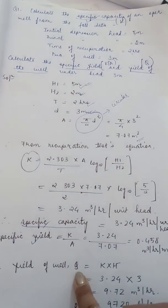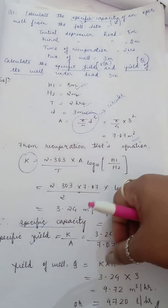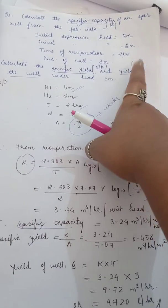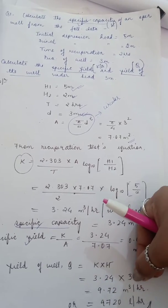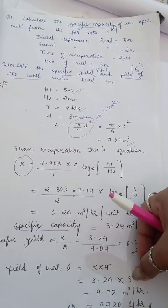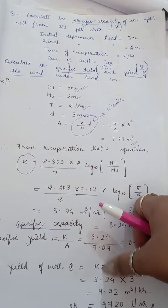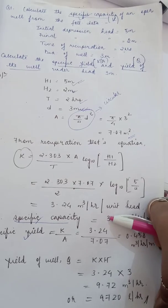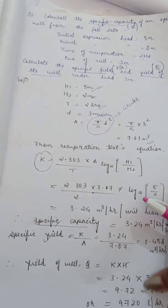Now we're asked to find the yield of the well under head of 3 meters. From Darcy's law, Q equals K times h. Here h is 3 meters, the head we're asked to find the yield under. K is the specific capacity 3.24. So 3.24 times 3 equals 9.72 meter cube per hour. This can also be written as 9720 liters per hour.